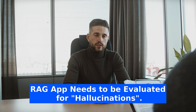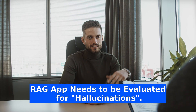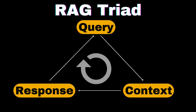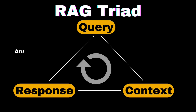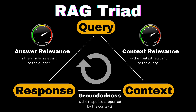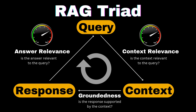Because of these failure modes, it's essential to evaluate RAG apps for hallucination at various stages of the RAG architecture. One of the efficient ways to do this is through the concept called the RAG triad. The RAG triad consists of three evaluations: context relevance, groundedness, and answer relevance. If our RAG app scores high for all three evaluations, then we can conclude that our app is free from hallucinations. So let's go through these evaluations one by one.